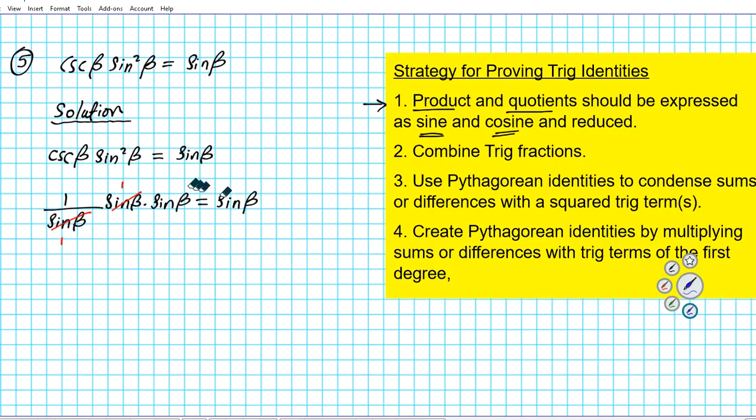Before I proceed, let me write down what I did here. So over here what we basically used was the reciprocal identity. And then we simplified what we have by dividing out common factors. So now we have sine beta is equal to sine beta. Ladies and gentlemen, we've been able to prove that the identity is in fact true.